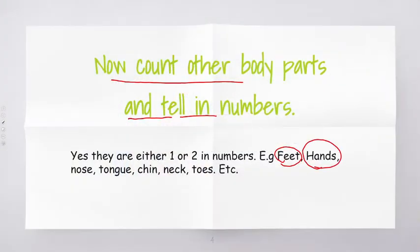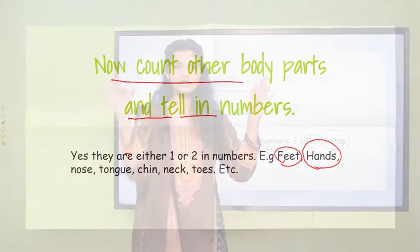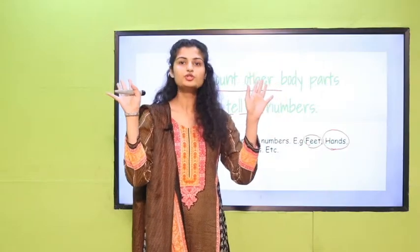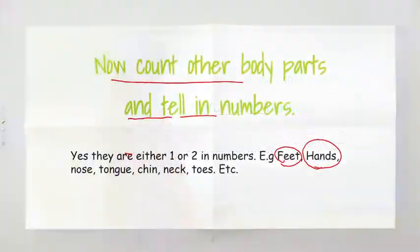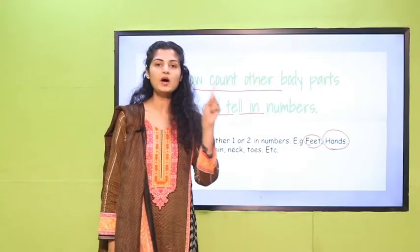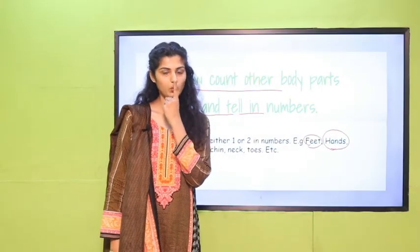Hands — how many hands do you have? One and two. Two hands. Nose — how many noses do you have? One. One nose.